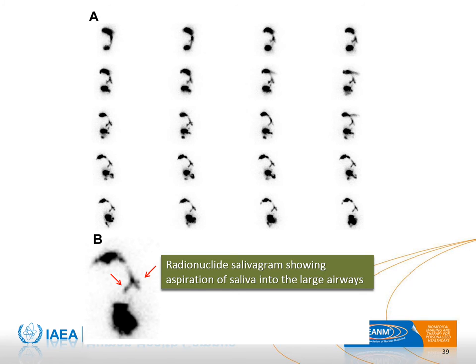This is an example of a radionuclide salivagram showing aspiration into the large airways.